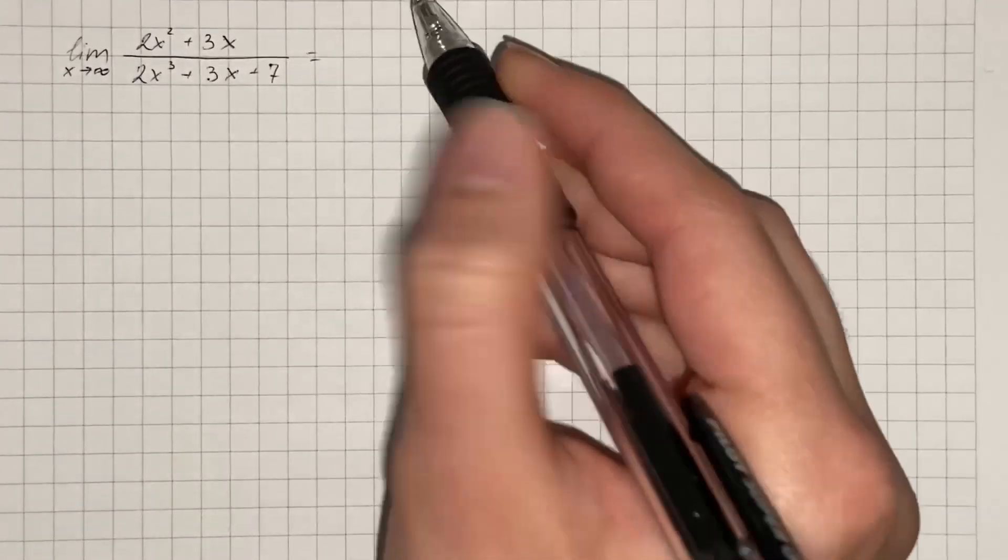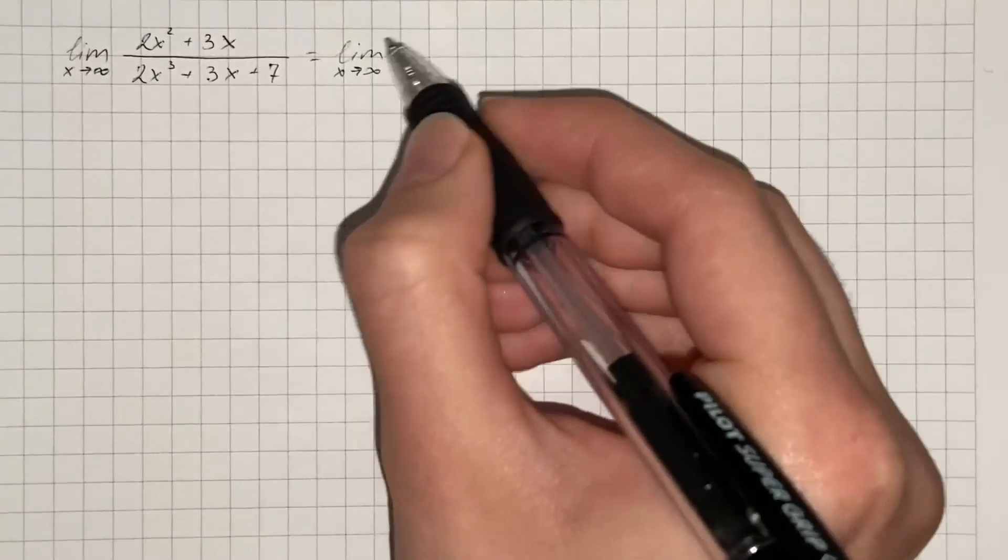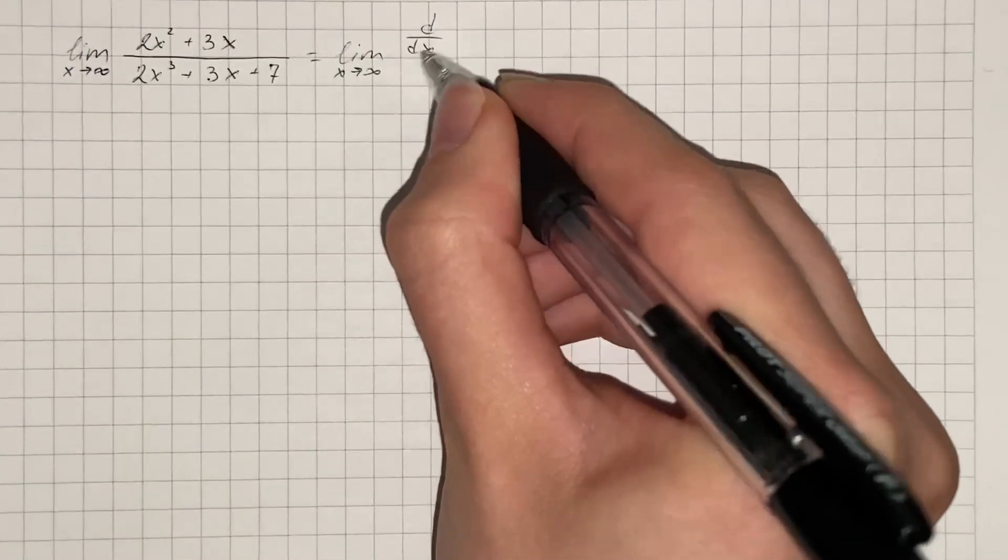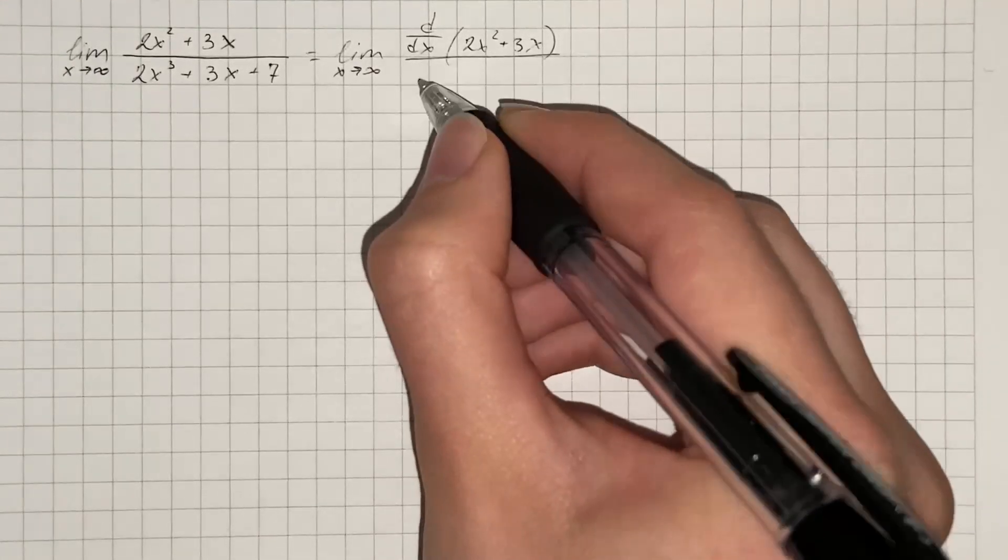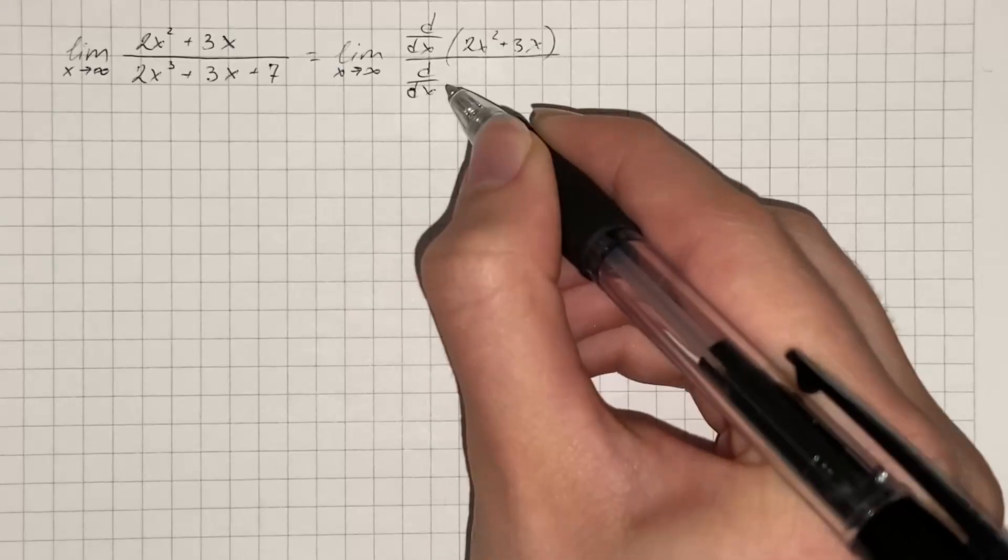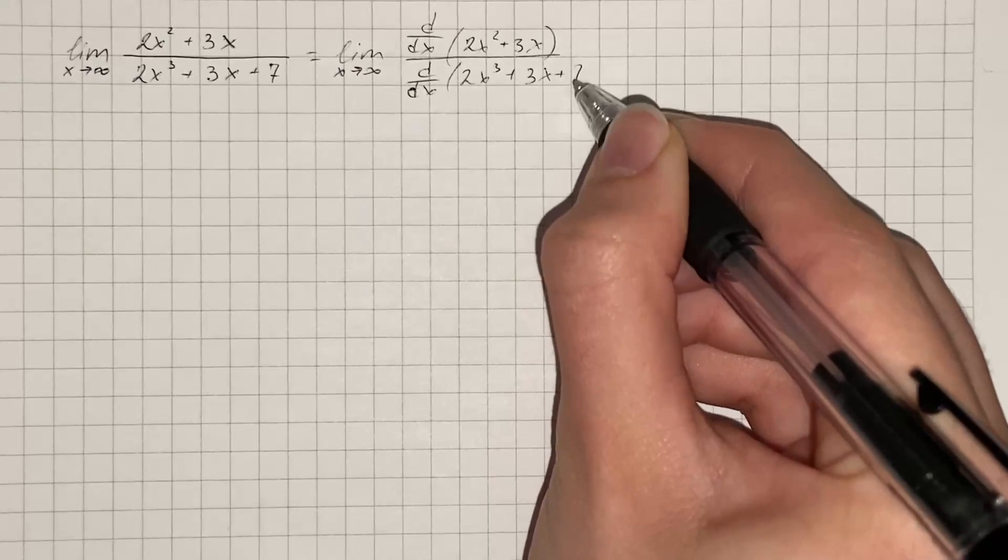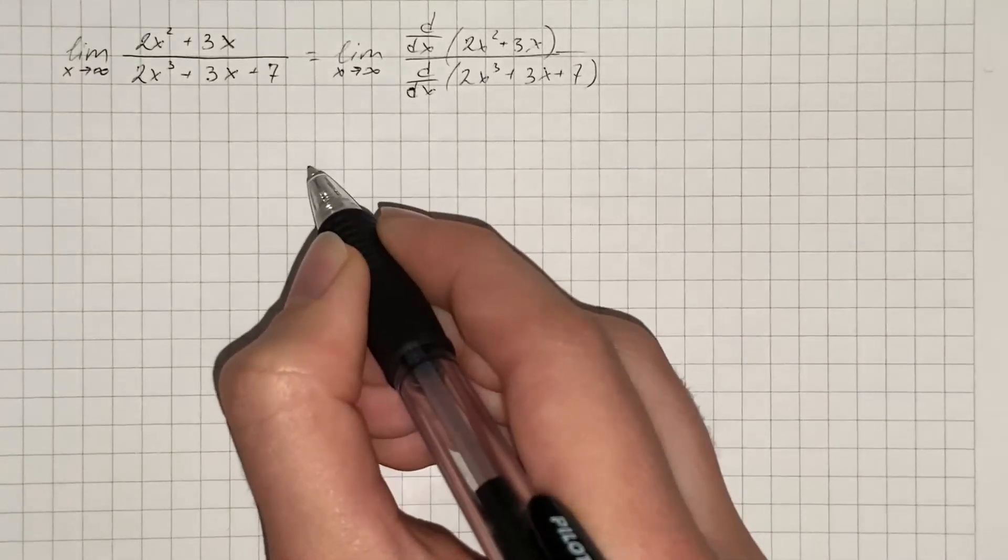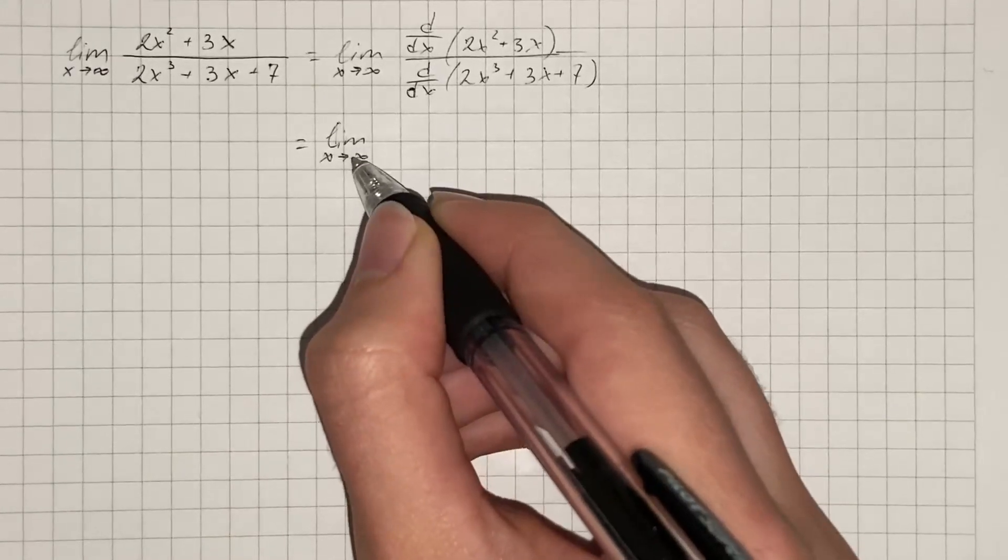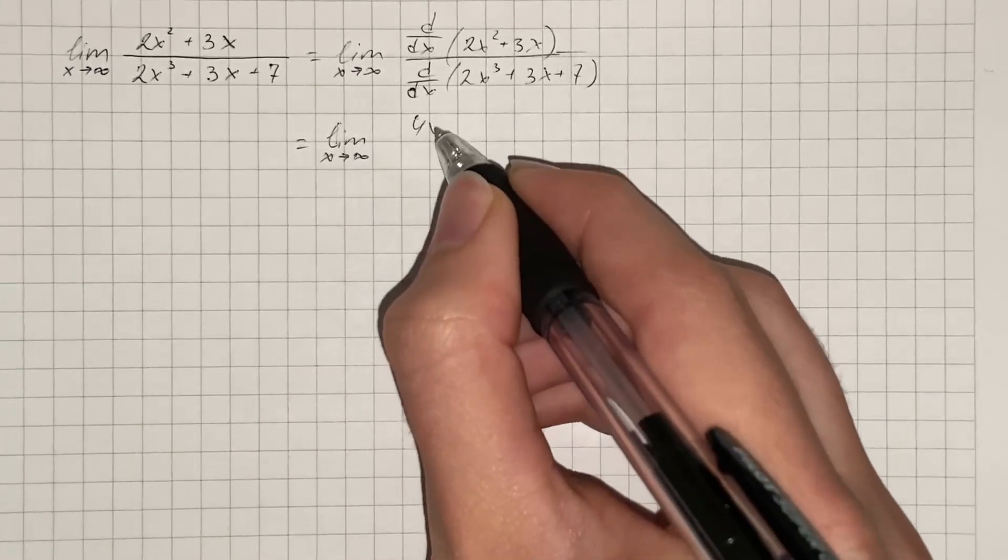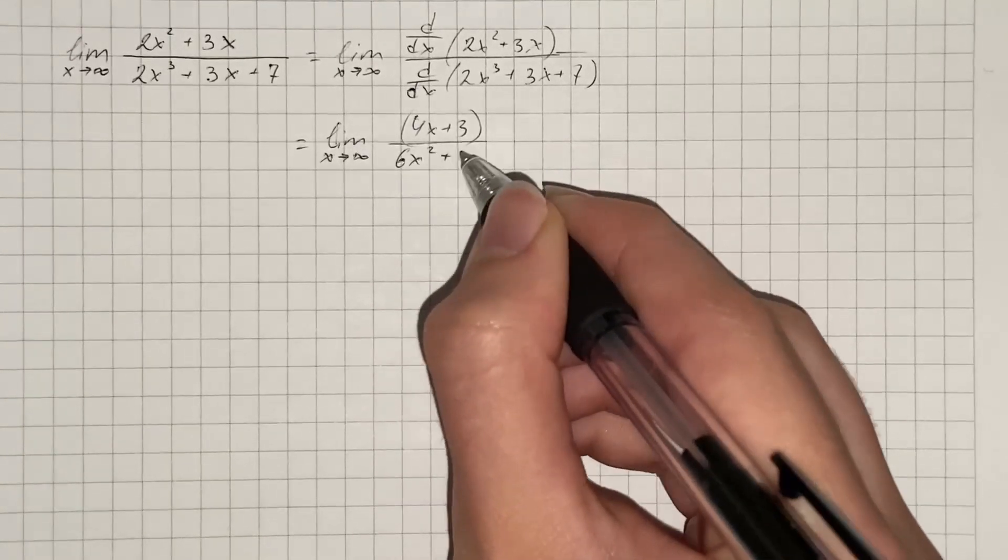So we differentiate the numerator and denominator. We take derivative of 2x squared plus 3x, and also we take derivative with respect to x of 2x cubed plus 3x and plus 7. Therefore, we get the limit as x approaches infinity of 4x plus 3 over 6x squared plus 3.